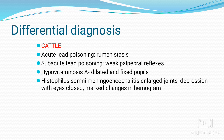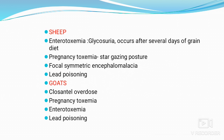Differential diagnosis in cattle: in acute lead poisoning there will be rumen stasis, whereas in PEM rumen motility is normal. In sub-acute lead poisoning there are weak palpebral reflexes. In hypovitaminosis A there will be dilated and fixed pupils. In Histophilus somni meningoencephalitis there will be enlarged joints, depression with eyes closed, and marked changes in the hemogram — in PEM the hemogram is normal. In sheep, enterotoxemia caused by Clostridium perfringens Type D shows glycosuria and occurs several days after the grain diet, while PEM occurs several weeks after grain diet. In pregnancy toxemia, there is a stargazing posture. Focal symmetric encephalomalacia and lead poisoning both show rumen stasis. In goats, differentiation from closantel overdose is also necessary.